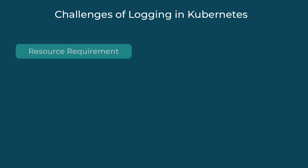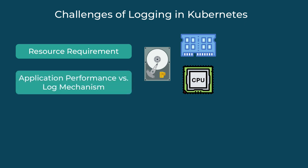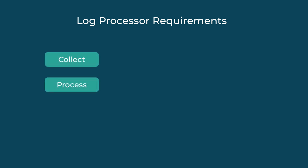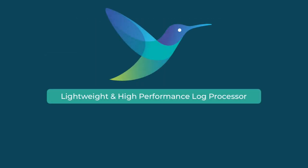Processing the data needs resources. The log processor needs enough memory, storage, and CPU resources to collect the logs, then parse and filter them. This should all be done as a background task — it shouldn't interfere with your main application's performance. The requirement for resources increases when you have applications with high throughput, meaning producing high amounts of logs. So the log processor not only needs to collect and process logs, but it needs to do it in a performance and resource efficient way. We need a lightweight and high performance log processor, and one of the most popular ones today is FluentBit.